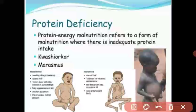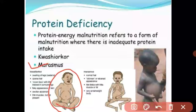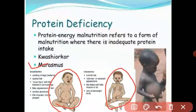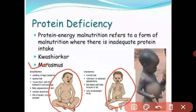Marasmus is also a deficiency disease due to the lack of carbohydrates, fat, and protein in the diet. This disease occurs in very small children from one month to one year of age — it affects infants up to one year of age. The children are not getting food properly and are not receiving a balanced diet in the early age, causing them to suffer from Marasmus.